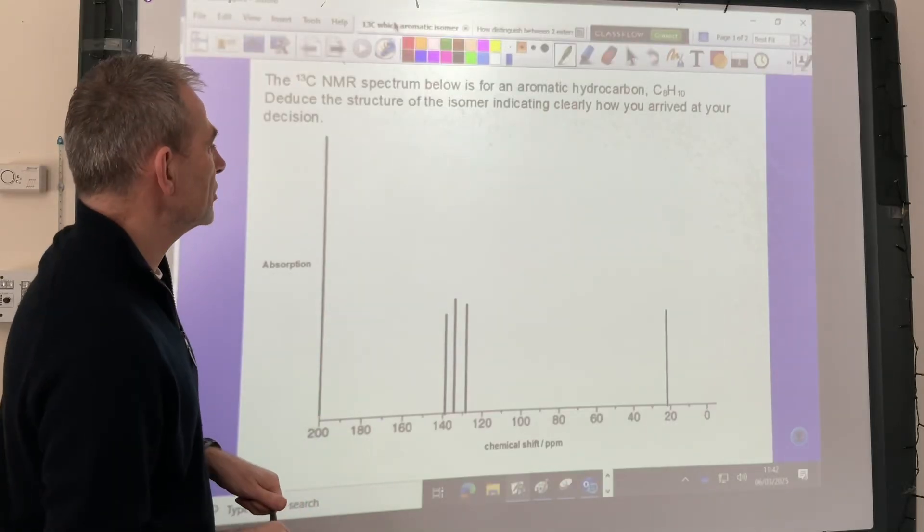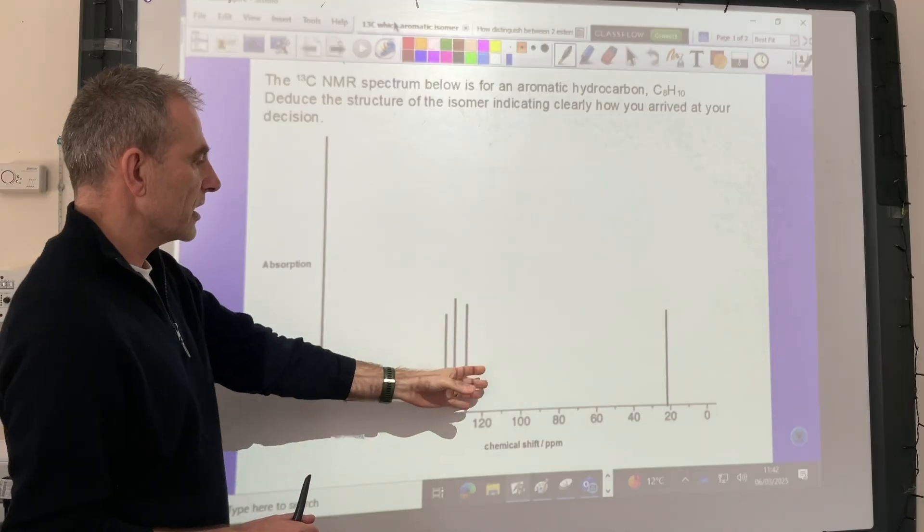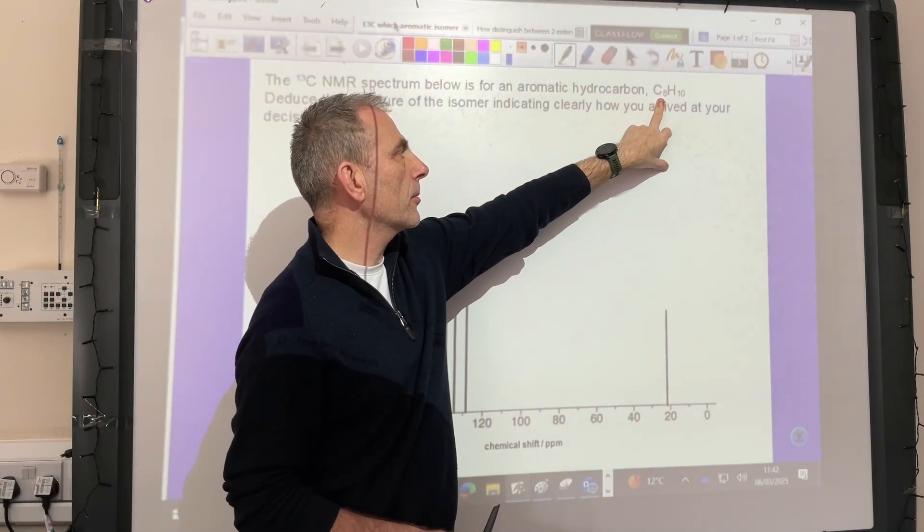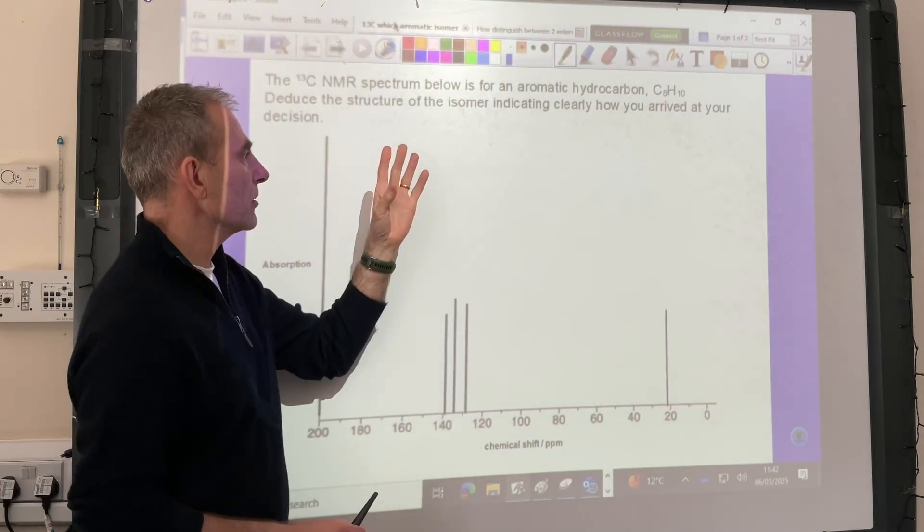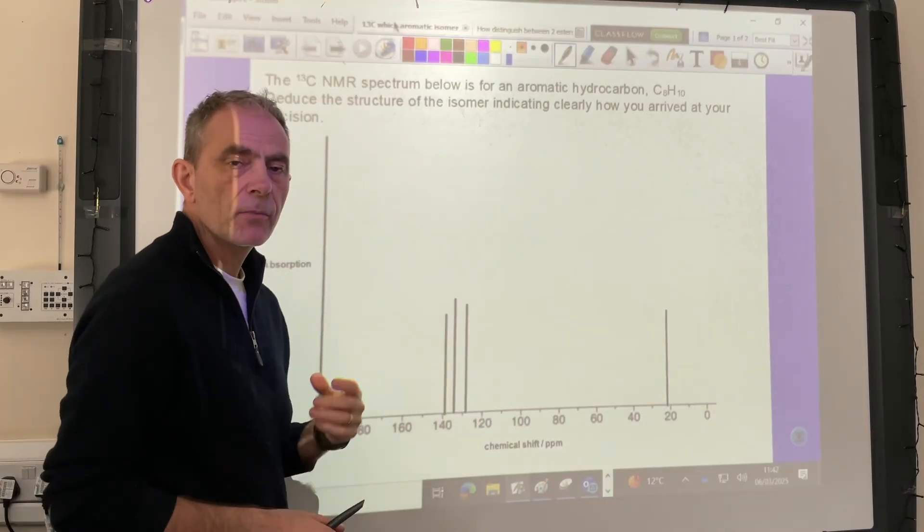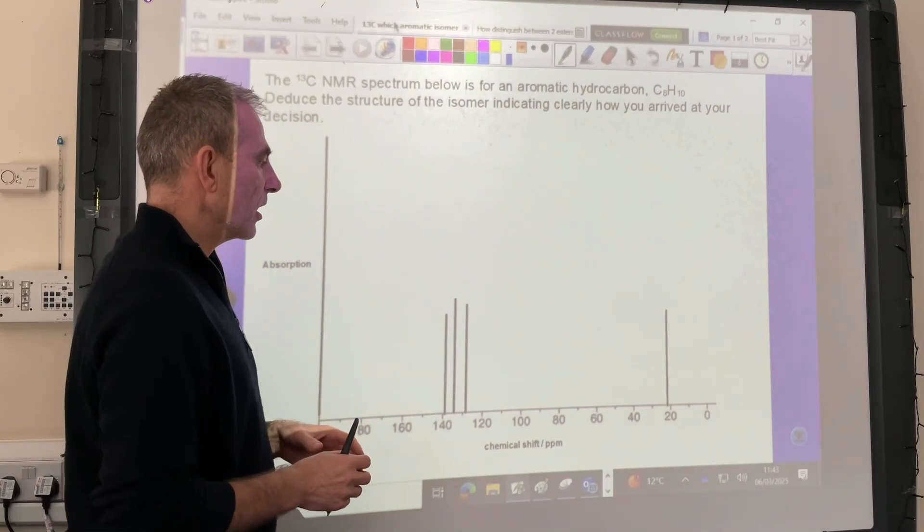I've got a quick Carbon-13 NMR challenge for you to try. We've got the C13 NMR spectrum for an aromatic hydrocarbon with the molecular formula C8H10. We've got to work out which isomer that spectrum belongs to and justify our answer.